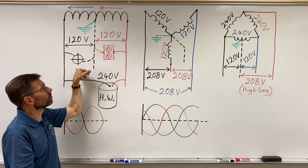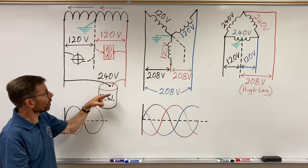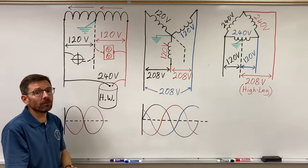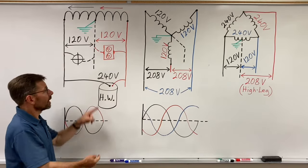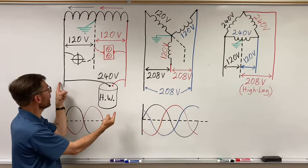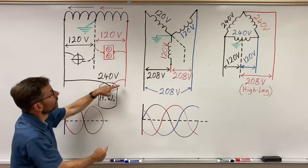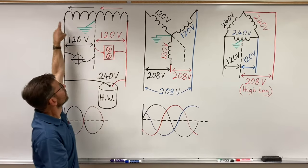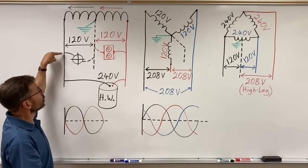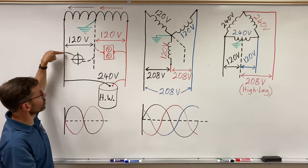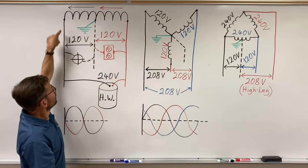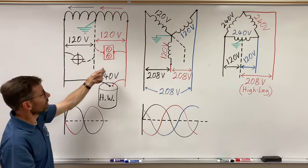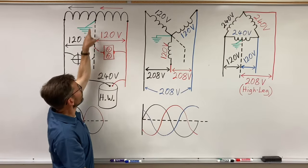We run our receptacles and lights off of 120 volts, and hot water heaters, baseboard heaters, and certain loads on 240 volts. For 240, I don't need a neutral — I just need a black and a red because the current just goes through the transformer. I use the neutral when I'm using a 120-volt load; when I turn a light on, it flows this way, or when I plug something into a receptacle, it flows this way.